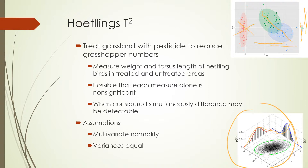There are some stringent assumptions that come along with Hotelling's t-squared, shown in the figure in the lower right corner. We assume multivariate normality, so that the variables are normally distributed across all of the variables being measured. We're also making assumptions about equal variances in the groups among those variables.